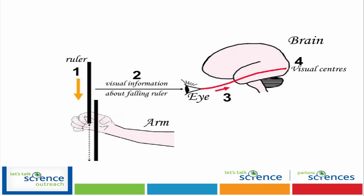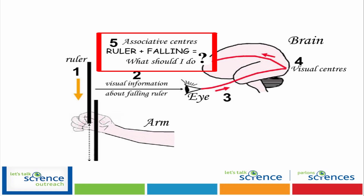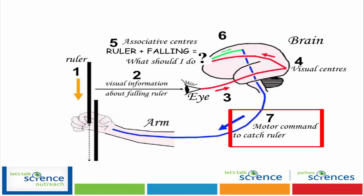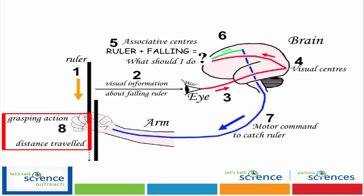From the visual center, information is sent to the front of your brain at the associative centers. The associative centers is where all the information about your senses goes. From the associative center, your brain realizes that a ruler is falling and now it needs to make a decision — in this case, it's going to decide to catch the ruler. So it sends that decision on a motor pathway. Your motor pathways help control your movement. That information is then sent along nerves to your arm, and the nerves tell your muscles in your arm to catch the ruler. That's why it takes time to react — because you need time for your brain to realize what's happening, make a decision, and then send that information to your body so it can react.